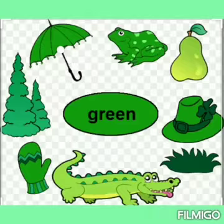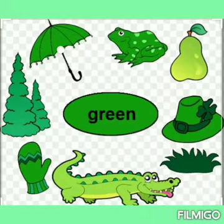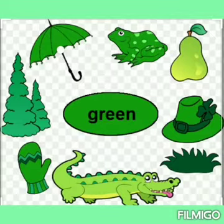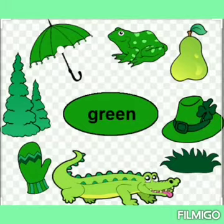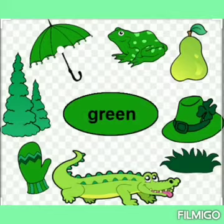The next color is green. Green things include tree, umbrella, frog, guava, hat, grass, alligator, and gloves. I have seen all these things with green color. This is our green color, and I hope the green color identification will be easy for you.